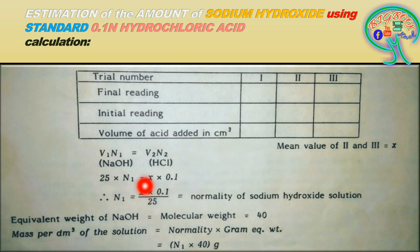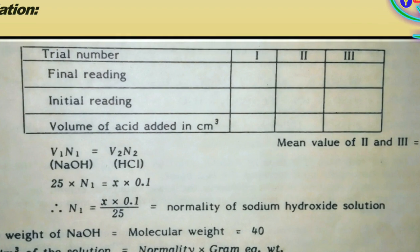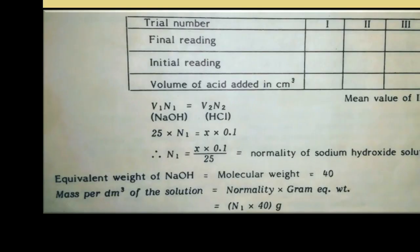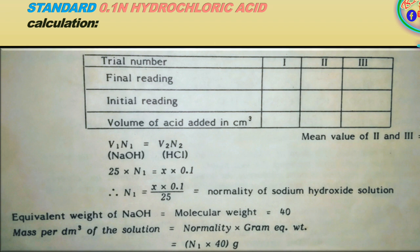By substituting the values, we get the normality of the sodium hydroxide solution. This normality is then multiplied by the equivalent weight of NaOH — which is its molecular weight, 40 g/mol — to give the mass per dm³ of the solution: mass = N₁ × 40. Whatever value we get from this product of N₁ × 40 is the estimated amount of NaOH present in the solution.